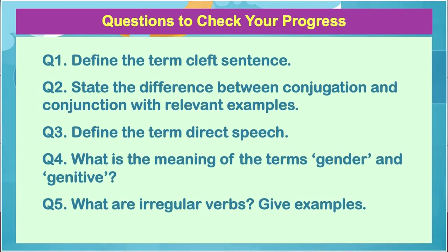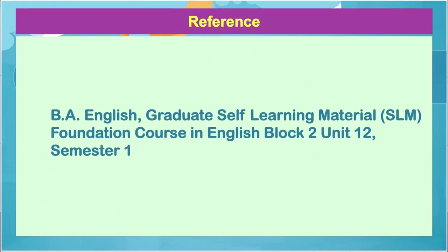This brings us to the end of this particular video. Let us come quickly to the questions to check your progress. Question 1: Define the term cleft sentence. Question 2: State the difference between conjugation and conjunction with relevant examples. Question 3: Define the term direct speech. Question 4: What are the meanings of the terms gender and genitive? Question 5: What are irregular verbs? Give examples. I hope you will also go through the BA English graduate self-learning material — that is the SLM — Foundation Course in English, Block 2, Unit 12, Semester 1. Thank you, dear learners.